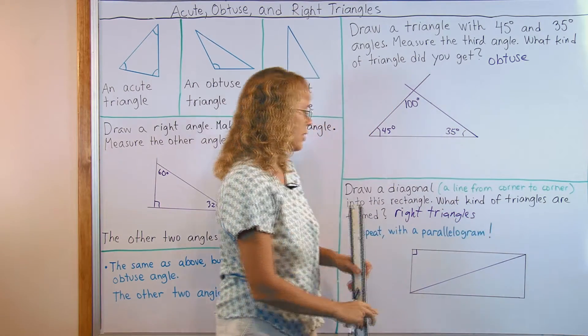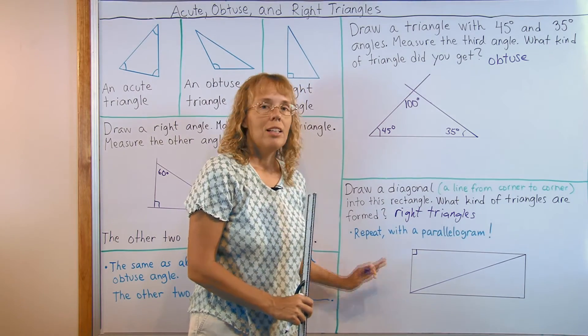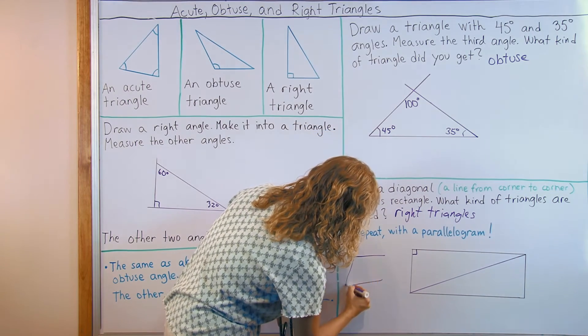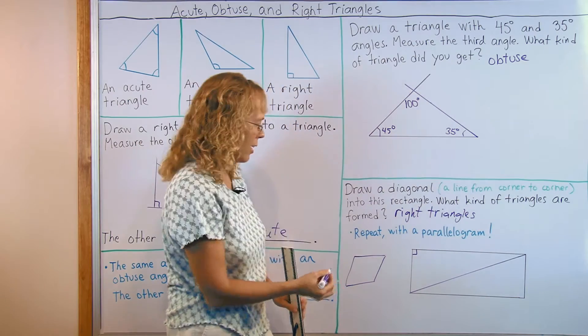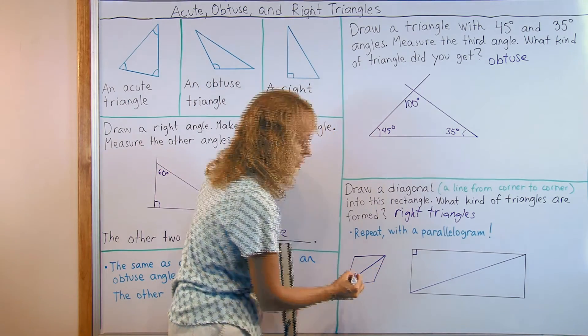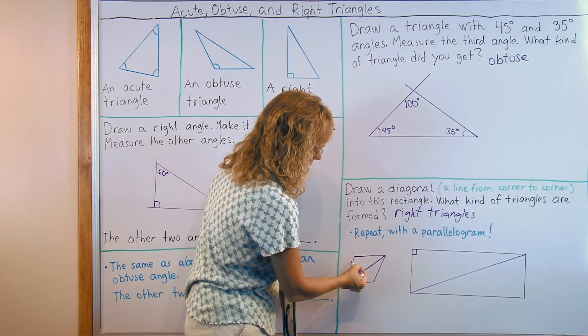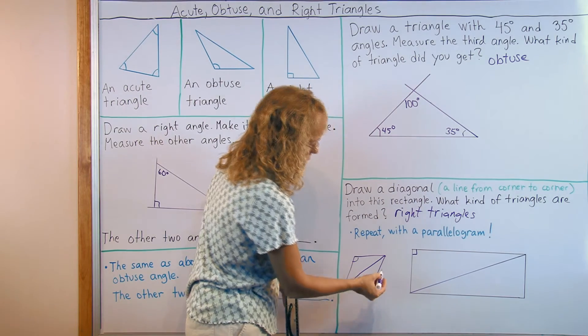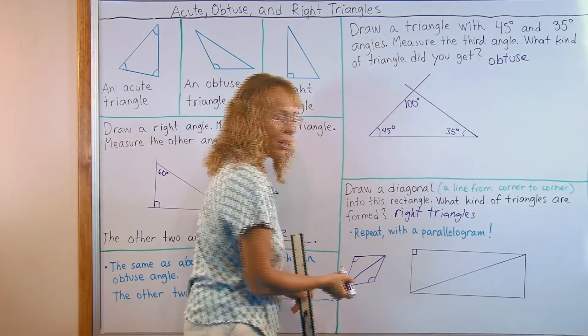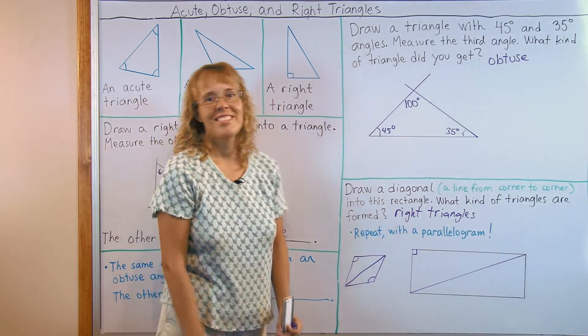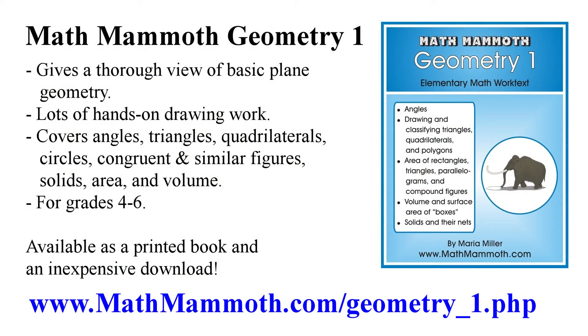But then what is interesting is to repeat this same idea using a parallelogram. Draw a parallelogram. I'll just sketch one here real quick. And then draw a diagonal into it and then check what kind of triangles you get then. And this here is clearly an obtuse triangle. Obtuse angle here, obtuse angle here. But what if I drew the diagonal the other way? Or had a little bit different looking parallelogram. So this is something for you to explore on your own. Thank you.